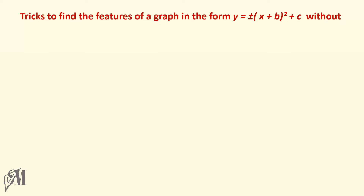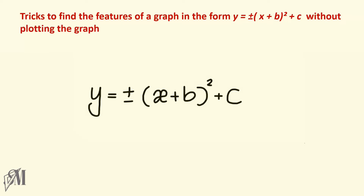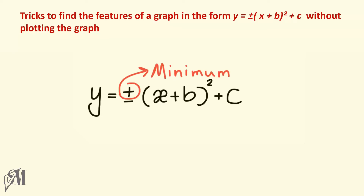Let's look into some simple tricks to find out the features of a graph by looking at the equation without plotting the graph. In this form of graphs, the positive or negative sign at the beginning decides whether the graph is a maximum or a minimum. If it is positive, the graph is a minimum. And if it is negative, the graph becomes a maximum.